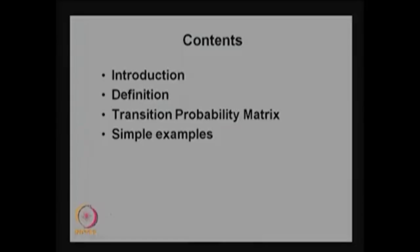In this stochastic process lecture we are going to discuss discrete time Markov chain. This is lecture 1. In this lecture I am going to discuss the introduction about the discrete time Markov chain, followed by the definition and the important concept called the one-step transition probability matrix, and a few simple examples.